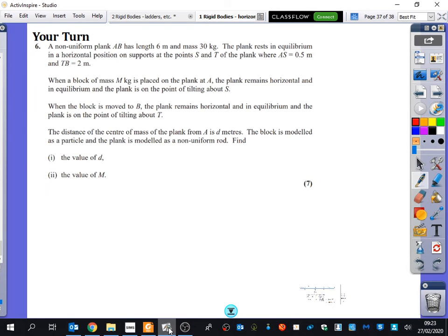Okay, we'll have a quick look at this question from the homework. So, first of all, it's non-uniform, 6 metres, 30 kilograms, rests in equilibrium, two supports, S and T, where AS is 0.5 and TB is 2. When a block of mass m kilograms is placed on the plank at A, the plank remains horizontal and in equilibrium, and the plank is on the point of tilting about S.